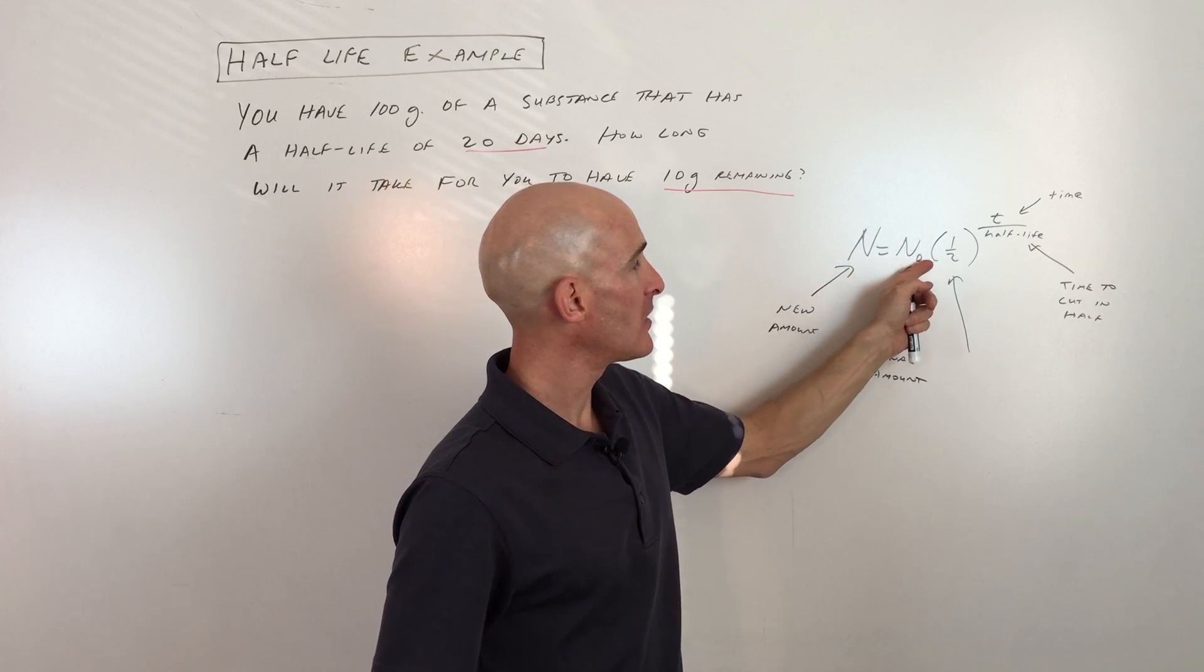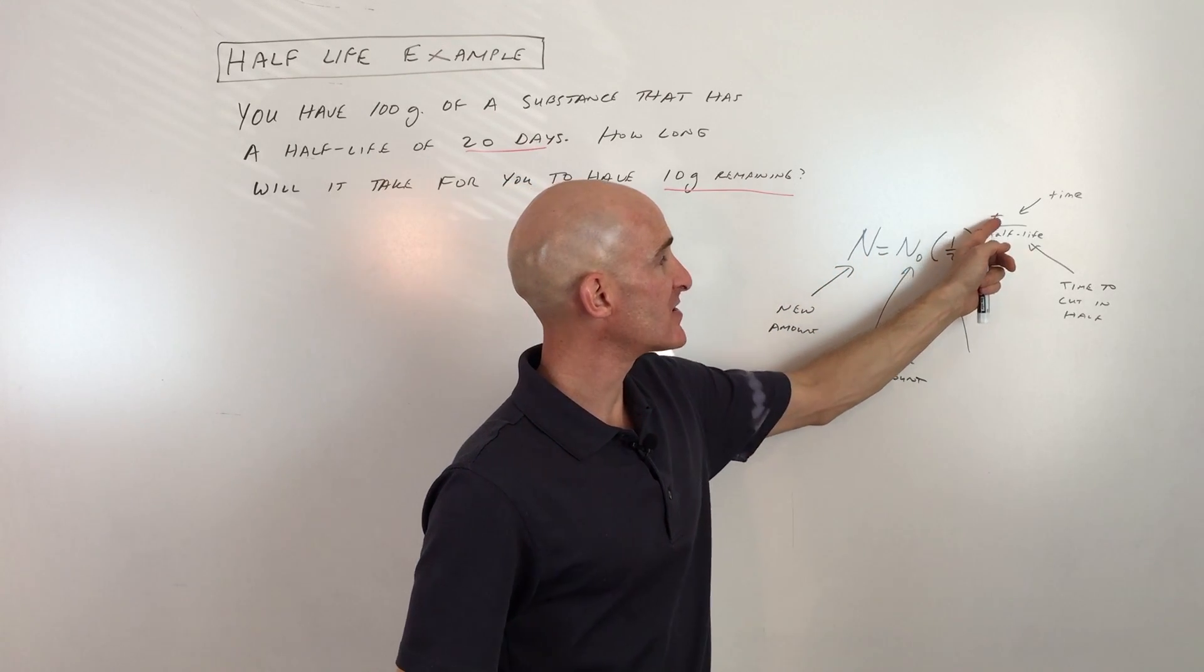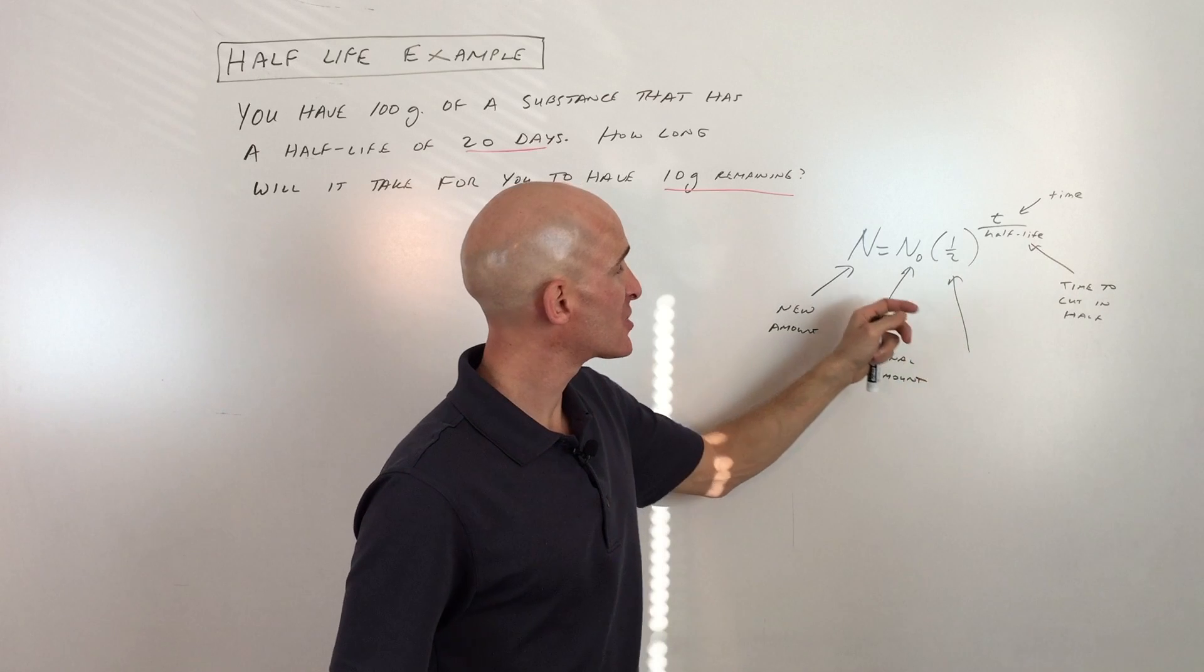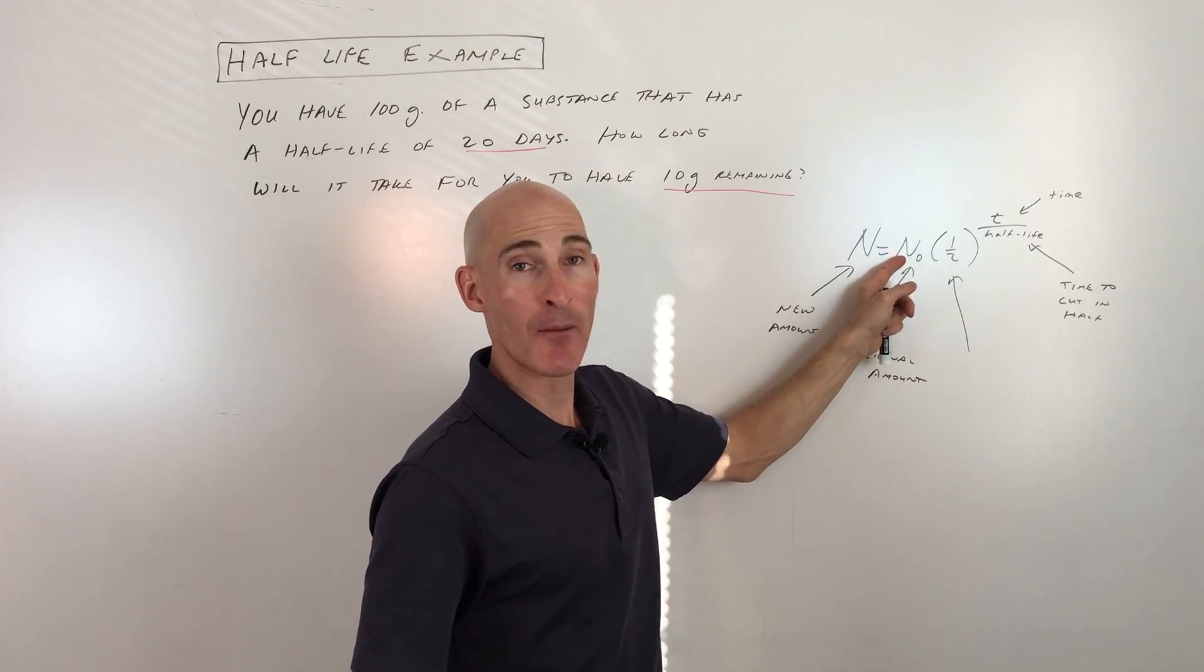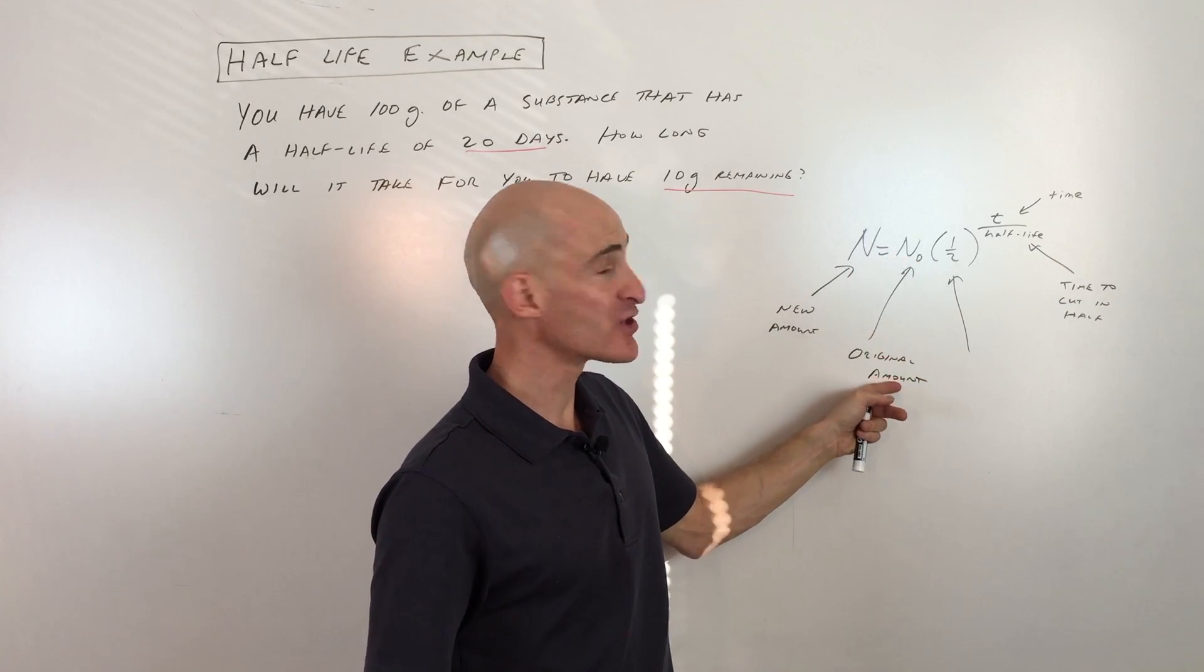n equals n sub zero times one half raised to the t over the half-life. So let's just break that down. n sub zero means the amount at time zero, the original amount.